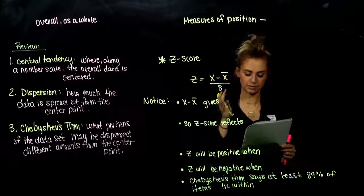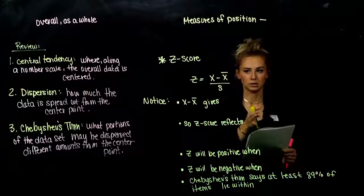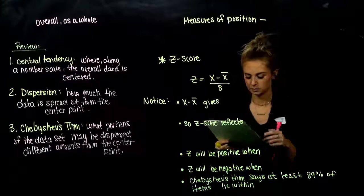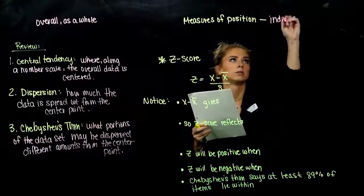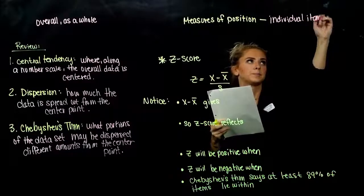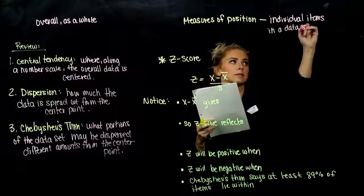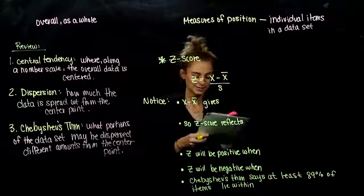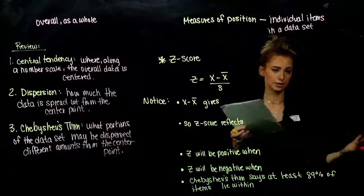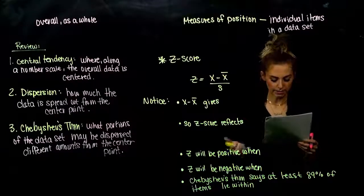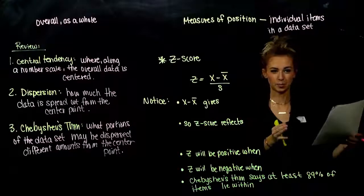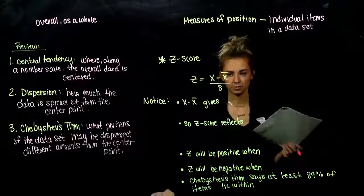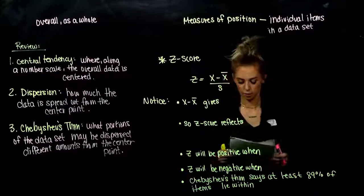But now we want to start looking at measures of position — what individual item sits within this entire data set. Instead of looking at it big scale, we want to zero in on specific items. We've got four different measures of position: Z-score, which is the most important; percentiles, which you've probably heard of; deciles and quartiles, which are similar to percentiles but divided into a different number of chunks; and then a box and whisker plot.